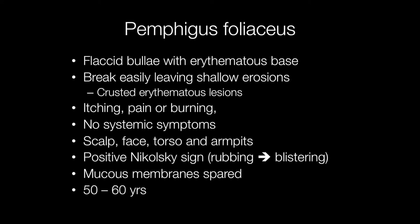Pemphigus foliaceus is an autoimmune condition characterized by flaccid bullae with erythematous bases. These break easily, leaving shallow erosions that become crusted. The condition may present with itching, pain or burning, and there are no systemic symptoms. The areas of skin involved include the scalp, face, torso and armpits, but in contrast to Pemphigus vulgaris, mucous membranes are spared.